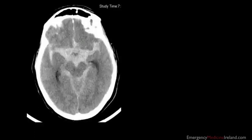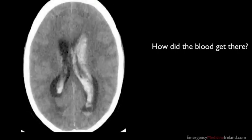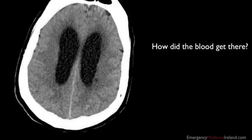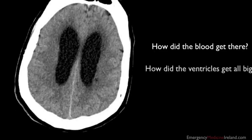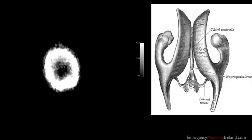He goes ahead, gets a CT scan. There's nothing particularly surprising — he has a lot of blood inside the brain, a classic subarachnoid hemorrhage. But as you scroll up further through the images you begin to see blood in the lateral ventricles and wonder how the blood managed to get there. A few hours later he's deteriorated, gets a repeat CT, and the ventricles have got really big — he's now developed hydrocephalus. That's what we're going to try to explain today.